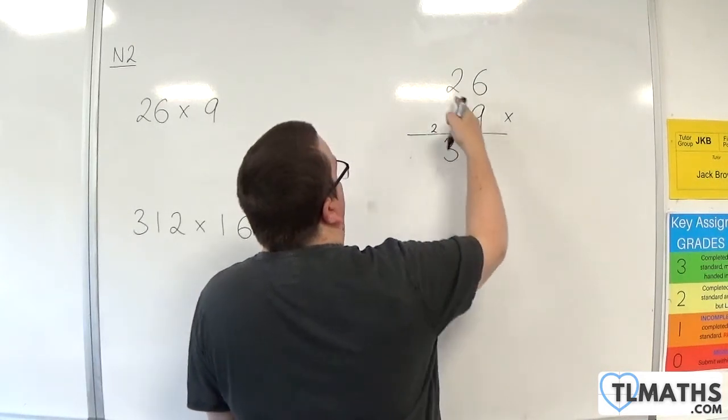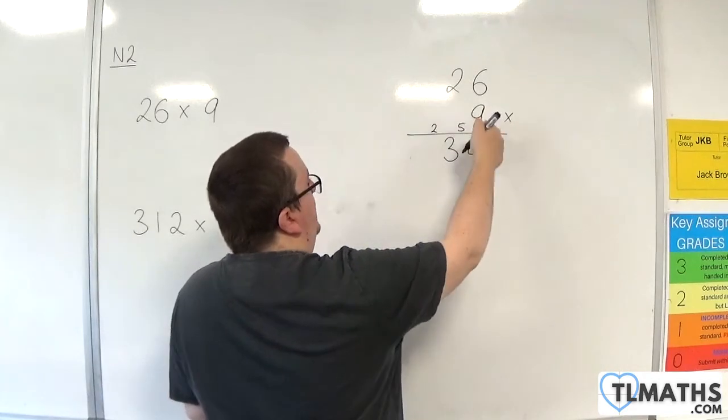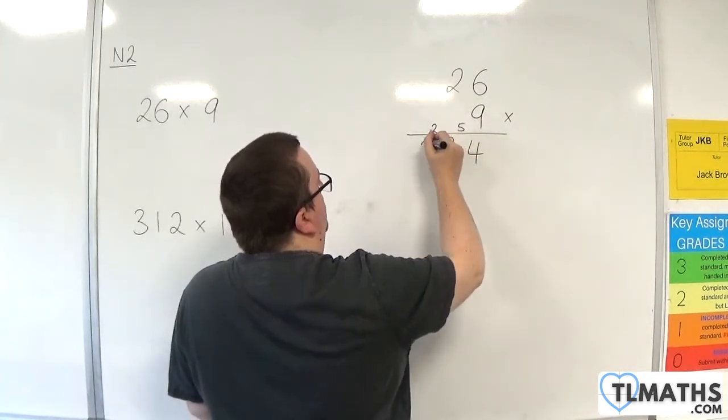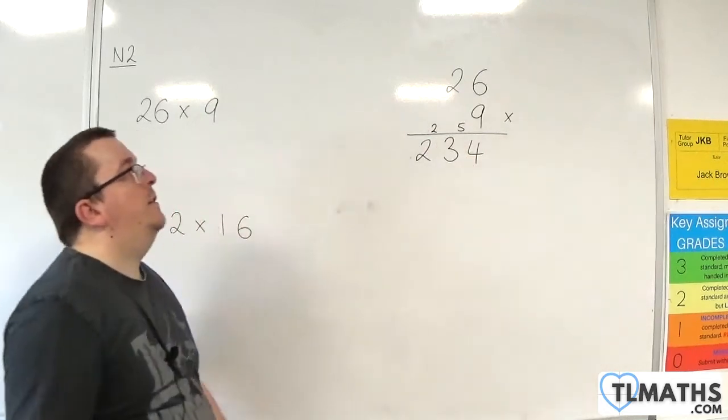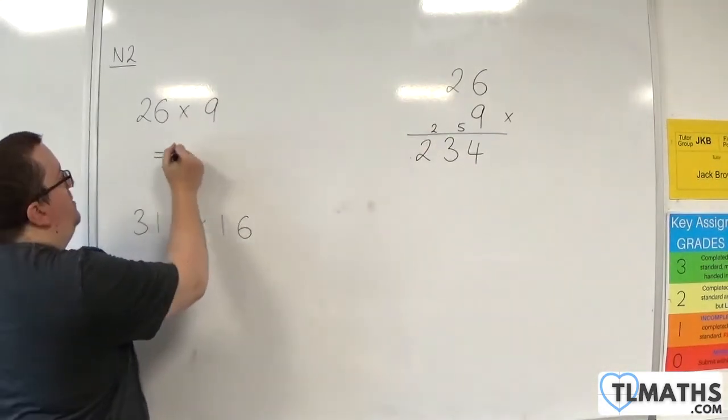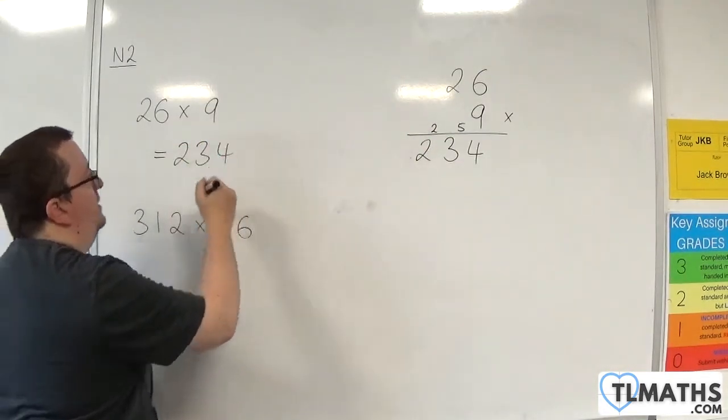But there's nothing left to multiply the 9 by, so it would just essentially be 9 times 0. And then we've got to add the 2, so the 2 can just drop straight down. So 26 times 9 is 234.